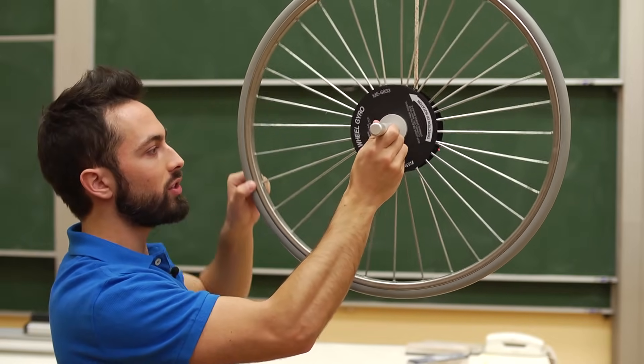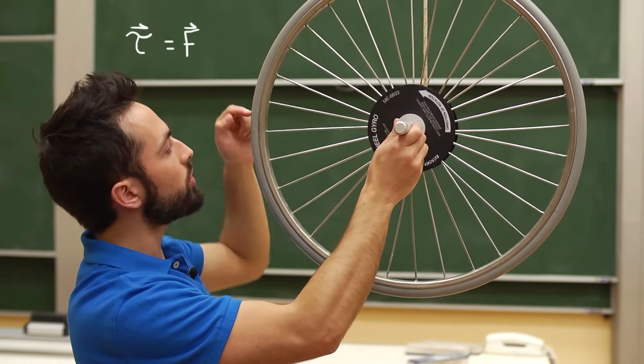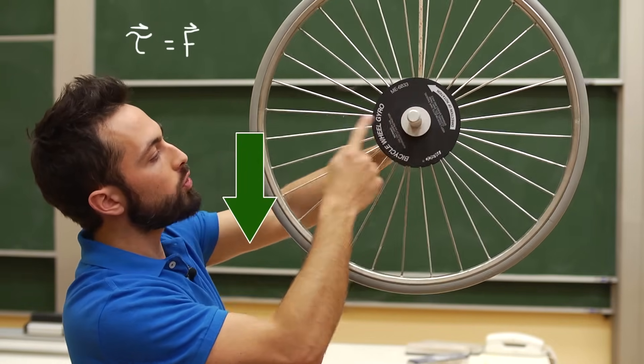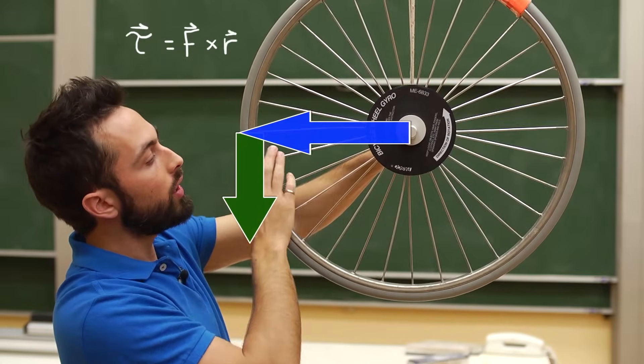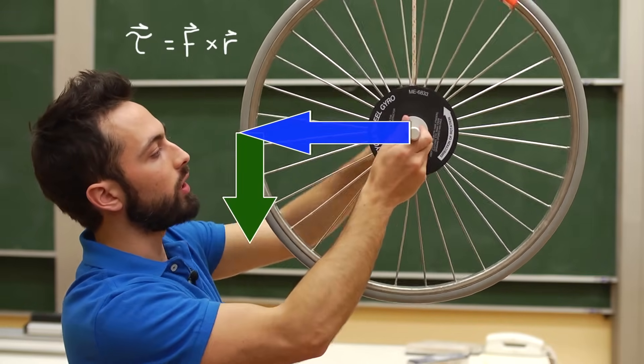If I apply a force down on this side of the wheel I create a torque. Now torque is force times the distance from the rotating axis. You could call it R. So torque is the force applied times the radius away from the turning axis.